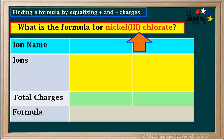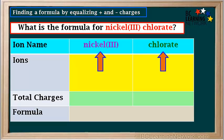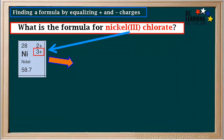We're asked to find the formula for nickel-3-chlorate. We write in the names of the ions: nickel-3 and chlorate. The positive ion is nickel, so looking it up on the periodic table, we find its box. Because nickel in the name has a Roman numeral 3 beside it, its charge is positive 3. So the positive ion is Ni3+, and we add that to the table.